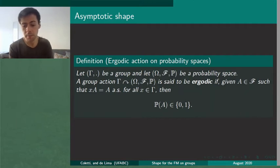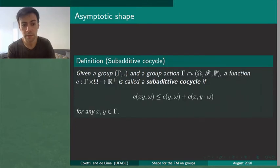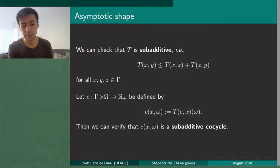We will define an equivariant group action of Γ on our probability space and we will associate this group action to a subadditive cocycle. This subadditive cocycle will be defined as our activation time but first we recall that T of x,y is the process which starts with one active particle at x.